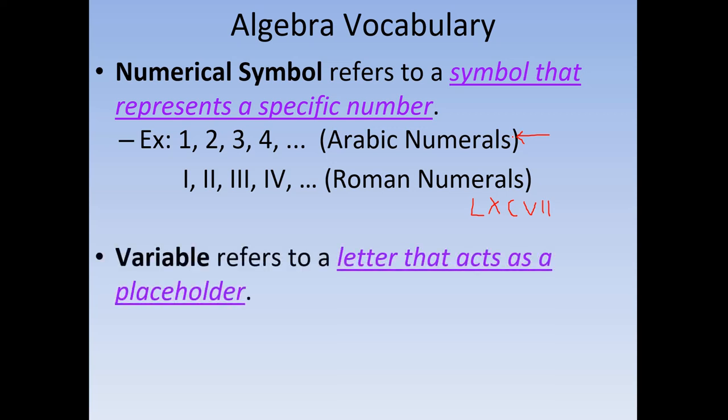The next one for Algebra is the Variable. A variable is just referring to a letter that can act as a placeholder. Examples of these are x, y, z, a, b, c. Basically, they're letters of the alphabet being used as a place where we can put numbers at some point. So you can have something that says 5x, and then x could be anything — 1, 2, 3, any number between negative infinity to positive infinity.